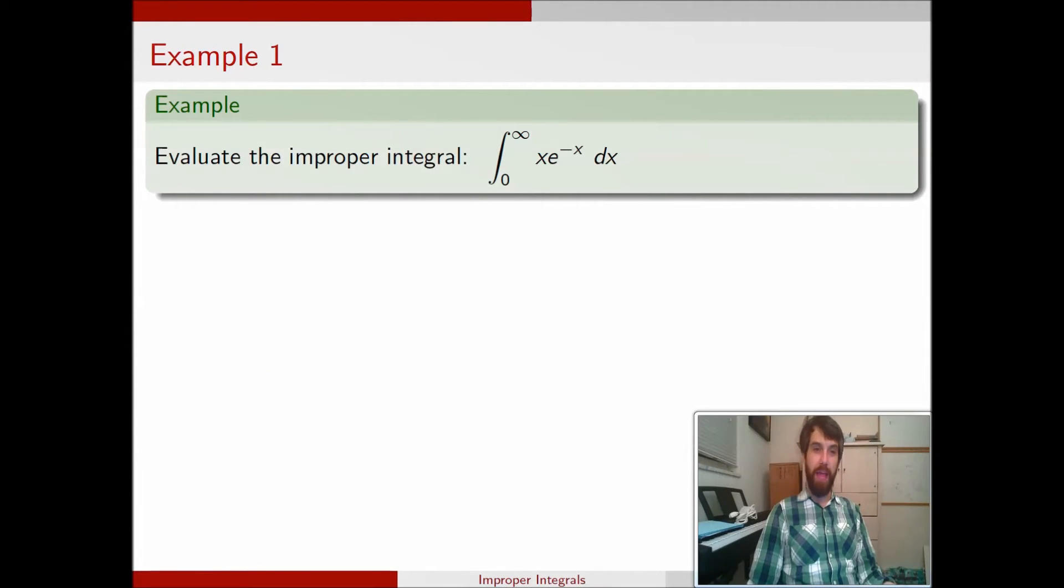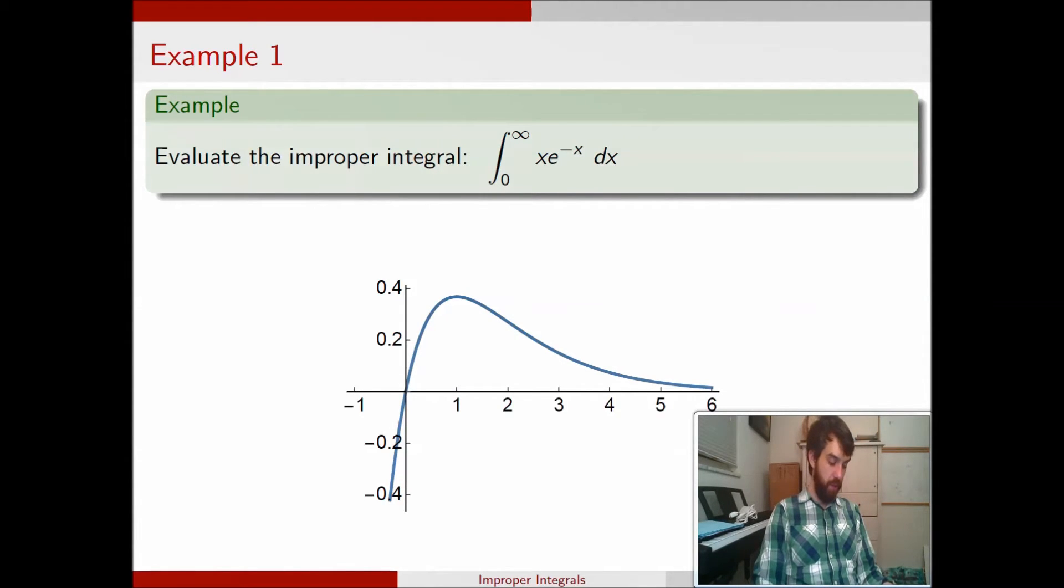Okay, so here we have a specific example. And the first point I want to look at is the geometric interpretation. So the graph of this function, x e to the minus x, looks like this. And so what we're actually doing when we try to describe this integral from 0 to infinity, we know that definite integrals, 0 up to some number like 7, these represent areas under the curve. And so the integral from 0 to infinity is going to be some area under the curve.